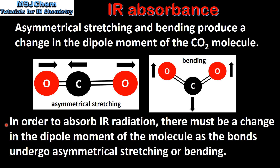In order to absorb infrared radiation there must be a change in the dipole moment of the molecule as the bonds undergo asymmetrical stretching or bending. So when a carbon dioxide molecule undergoes asymmetrical stretching or bending there's a change in the dipole moment of the molecule, and this enables the molecule to absorb infrared radiation.